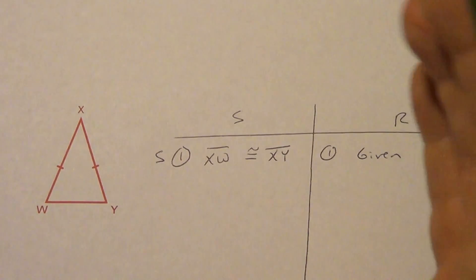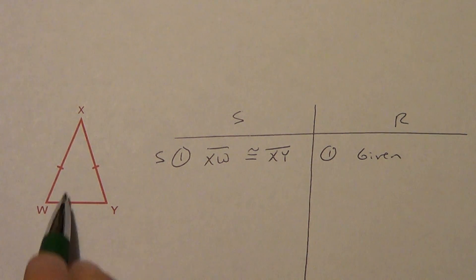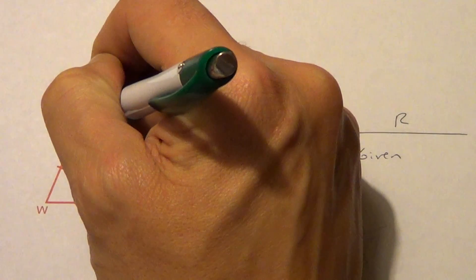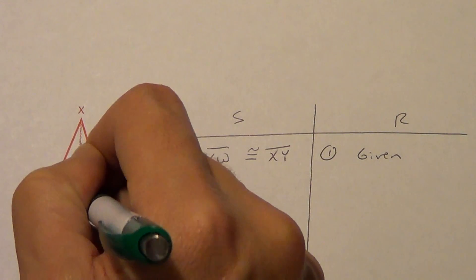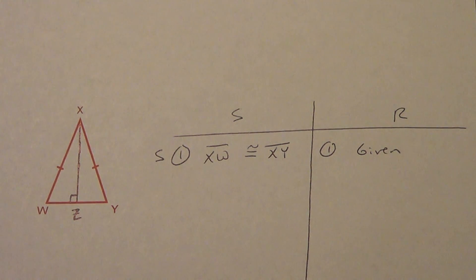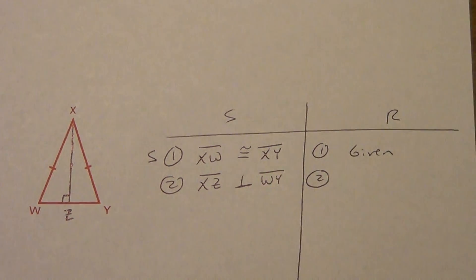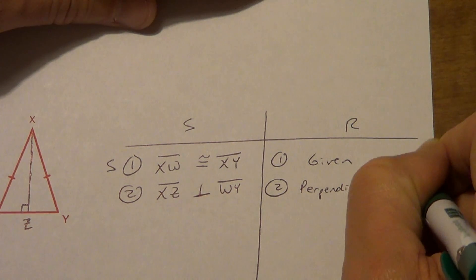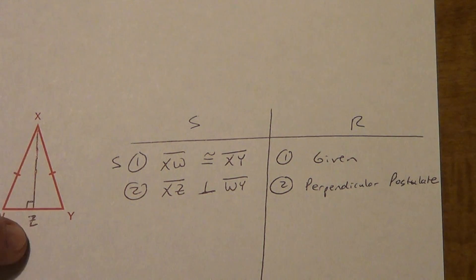I can draw from X straight down to a point — call it point Z. There's a postulate that says if you have a line and a point not on that line, there is exactly one line through that point that meets the line perpendicularly. So I know it exists and I'll draw it in. I know it's perpendicular down here somewhere — that somewhere is point Z. That's the perpendicular postulate.